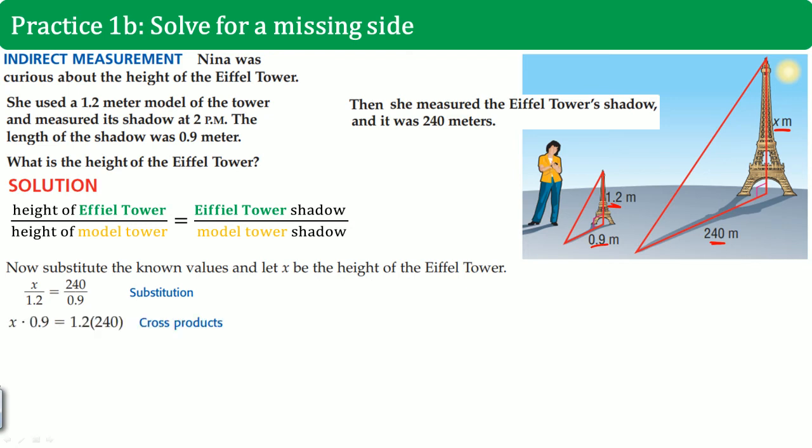Cross multiply. Once you look at the cross multiply, and once you simplify, you're going to start noticing it looks the same as before. Divide by 0.9 over, you get the same answer as X equals to 320 meters tall.